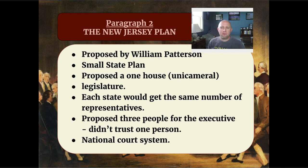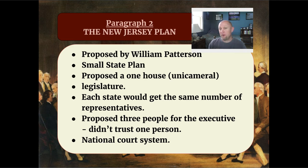Moving on to the New Jersey Plan, it was proposed by William Patterson, who is less well-known except for the fact that there's a town in New Jersey called Paterson, New Jersey. This is known as the Small State Plan — New Jersey at the time was a small state. It proposed a one-house legislature, similar to the Articles of Confederation, that was based on each state being equal. So however many representatives they agreed upon, each state would get the exact same number.